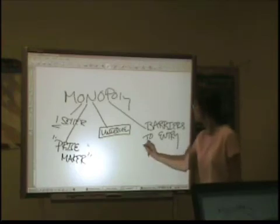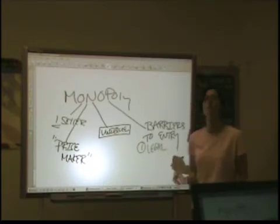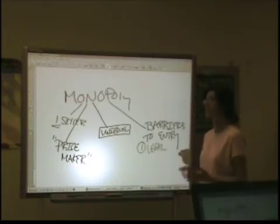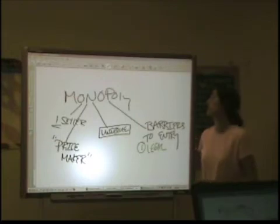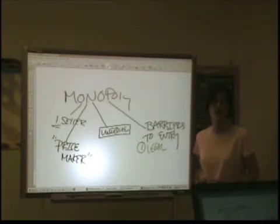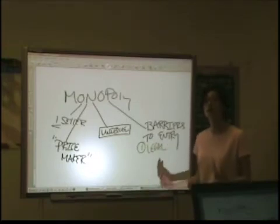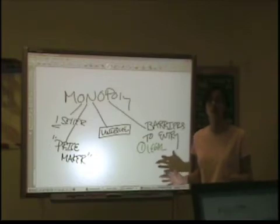Different types of barriers: you might be dealing with legal barriers. Legal barriers can include things like exclusive contracts, patents, and copyrights. If a particular company has the patent on a new device, then as long as they hold the patent and are not willing to sell the rights to anyone, that is a legal barrier to entry. If anyone else starts producing that product or tries to infringe on those patent rights, they're breaking the law — and the monopolist may go after them for big piles of money, depending on how much of the market is being infringed upon.